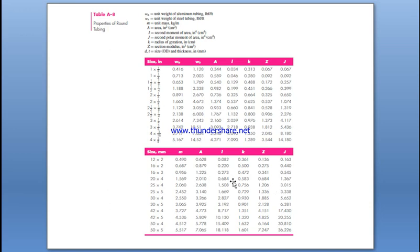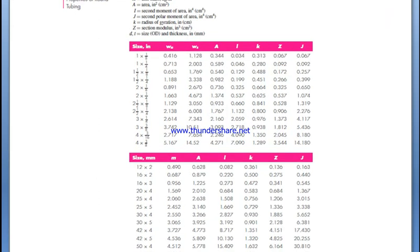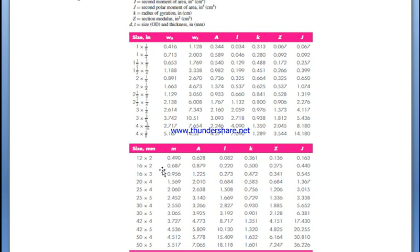When considering the metric dimensions, you have the size as the outer diameter and the thickness. You have the area moment of inertia and the polar moment of inertia J.